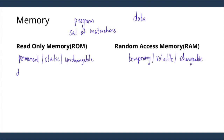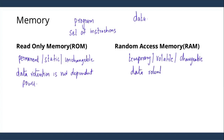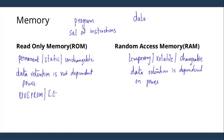In read-only memory, data retention is not dependent on power — if you switch off the power, the data will not go. In RAM, data retention is dependent upon power, so if you switch off the power, the data in the RAM will be lost while in the ROM it will not. Technologies for ROM include UVEPROM (ultraviolet erasable PROM), electrically erasable PROM (EEPROM), and flash. For RAM, we have static RAM (SRAM), which is used in microcontrollers, and DRAM, which is used in microprocessors.